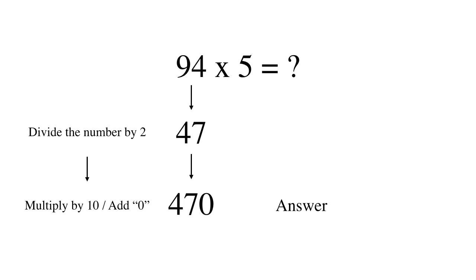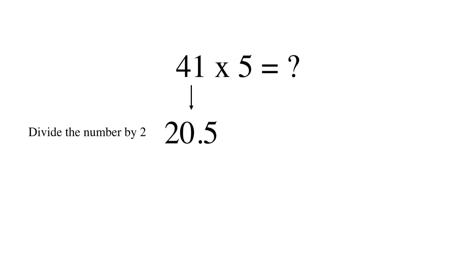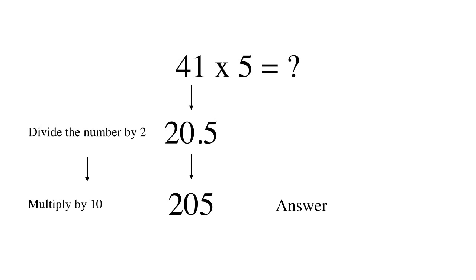Another example: 41 multiplied by 5. In the first step, we divide the number by 2, so we divide 41 by 2 and get 20.5. Then we multiply the answer by 10 and get 205.